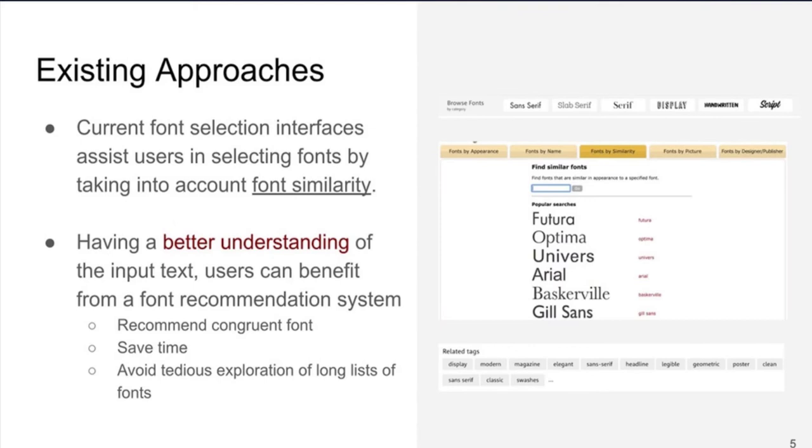Current font recommendation interfaces and commercial online services assist users in selecting fonts by using different techniques such as font similarity or font categorization. For example, display, script, or sensory. These techniques do not consider the verbal context after reading text. However, by having a better understanding of the input text, we can provide users with a better font recommendation model. The proposed model can recommend congruent font with input text and save time by avoiding tedious exploration of long lists of fonts.